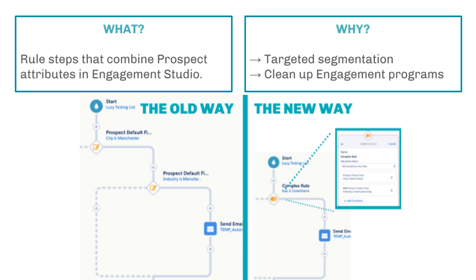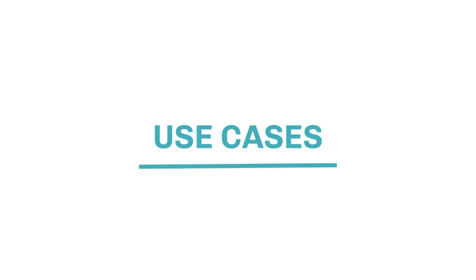Not only can we get better with segmentation inside Pardot, it's also a great opportunity to clean up the Engagement Studio programs we're running. As you can see, I've put in a comparison here which I've called the old way — before, we could only have one attribute per rule step, so we had to have multiple layers to get the segmentation we wanted. Now you can combine these into one neat rule with only one layer, which prevents Engagement Studio programs from bloating out.